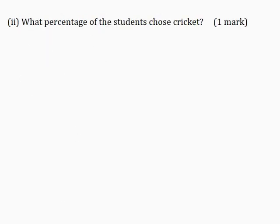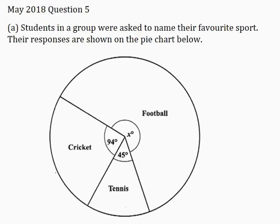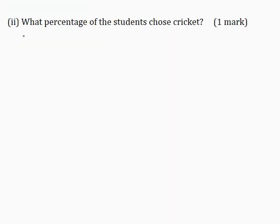Part 2: What percentage of the students chose cricket for one mark? In our pie chart here, this sector that represents cricket has an angle of 94 degrees. So I can write here 94 degrees over 360 degrees multiplied by 100 over 1 and this gives me 26.1 percent.